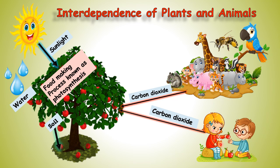As plants can make their own food, they don't need anybody's help for preparing food. They produce their food themselves. That is why they are called producers — because plants produce their food themselves.